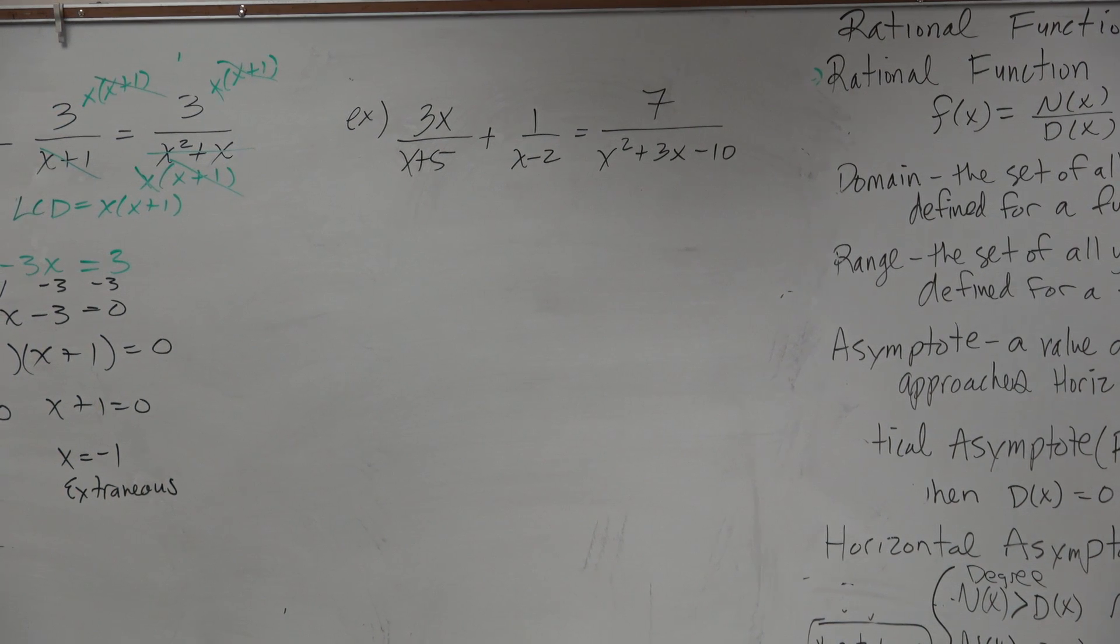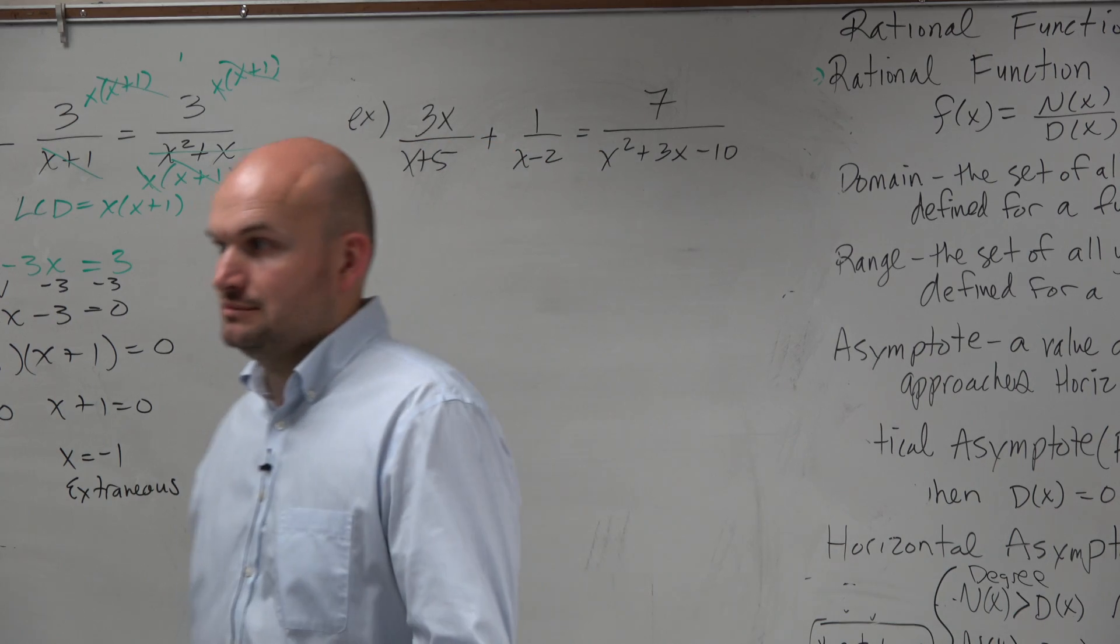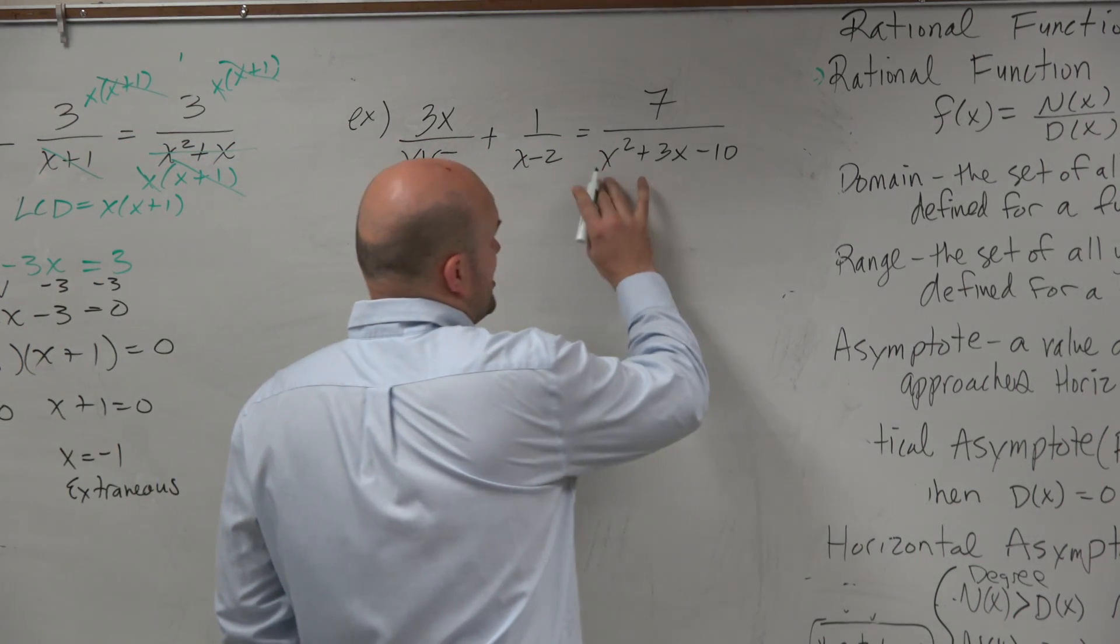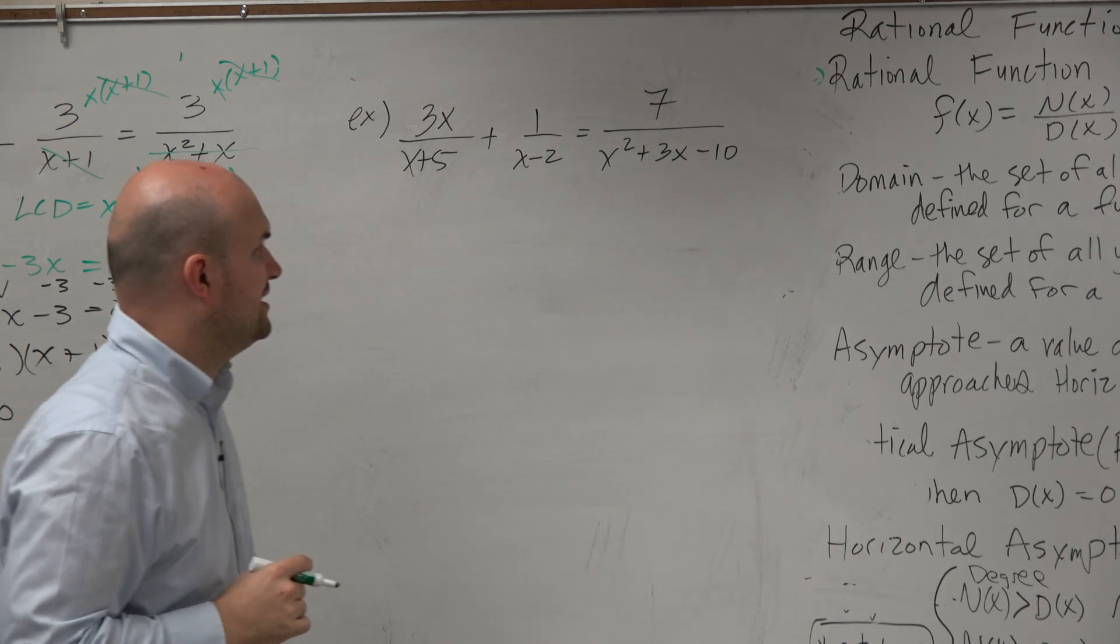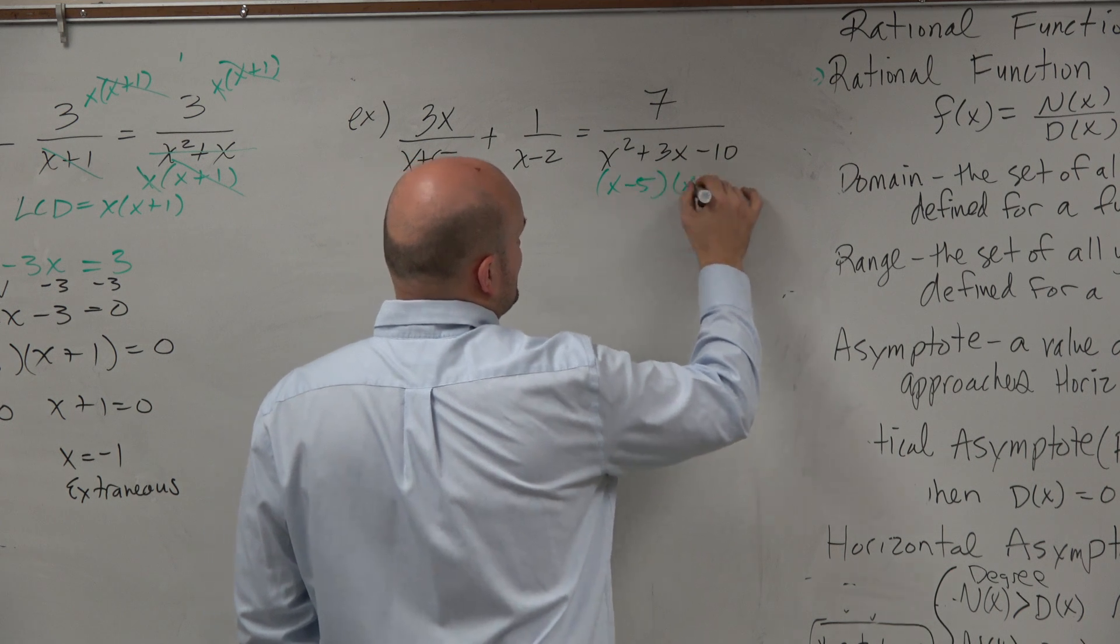Next one, ooh. Should we factor first? Yeah, we probably should, right, Selma? So let's see what this factored is. What two numbers multiply to give me negative 10, add to give me 3? That's x minus 5 times x plus 2.